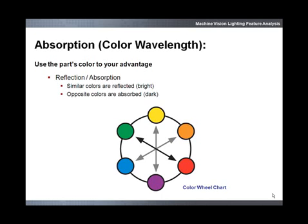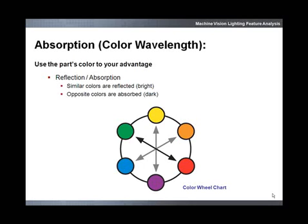Let's start with absorption. An object's perceived color is based on which light wavelengths are being absorbed and reflected. This fact can be used to create contrast by controlling the color of a light source. For example, if you have a green PCBA, a red light will show the PCB as dark, while a green light would show it as light. A light source and part feature that are similar colors will reflect more light and the feature will appear bright.